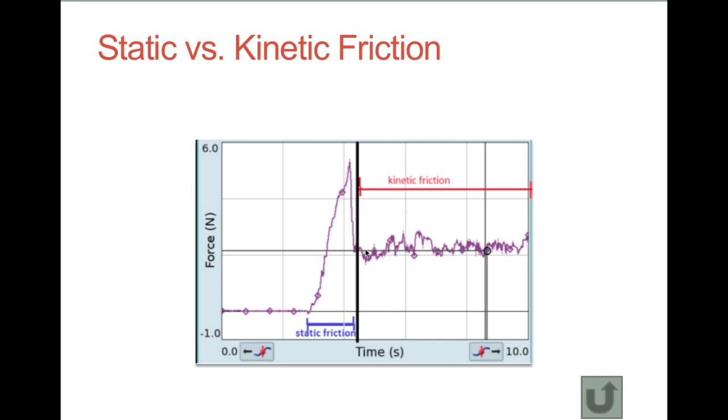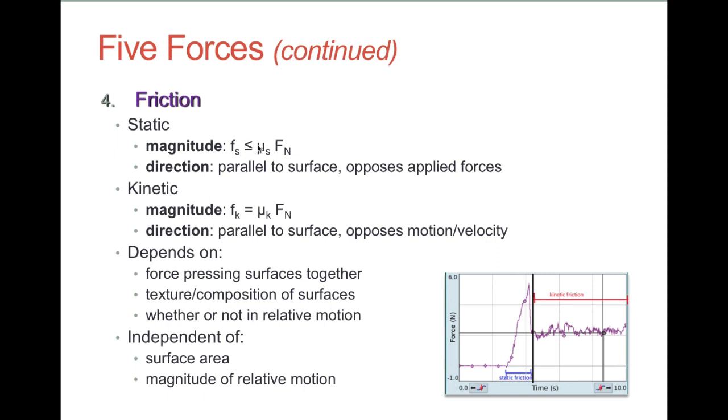Once it starts moving, friction takes on a more or less constant value as the two surfaces move together. And we will call that value the coefficient of kinetic friction. So, static friction will have a maximum value, and we'll say the static friction is always less than or equal to the coefficient of static friction and a product of that in the normal force, how hard the two surfaces are pressed together.